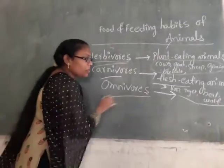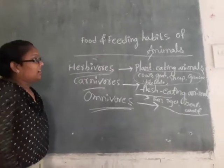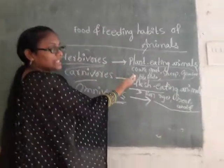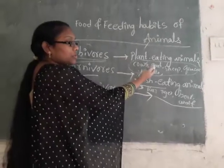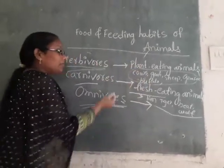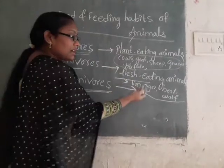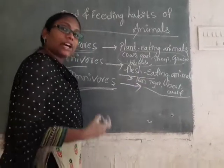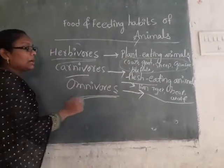What is omnivores? Examples of plant-eating animals: cows, goats, sheep, giraffe, buffalo. Carnivores means flesh-eating animals — examples: lion, tiger, wolf. These are the carnivores. But what is omnivores?